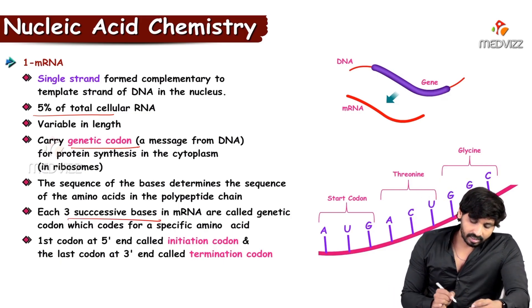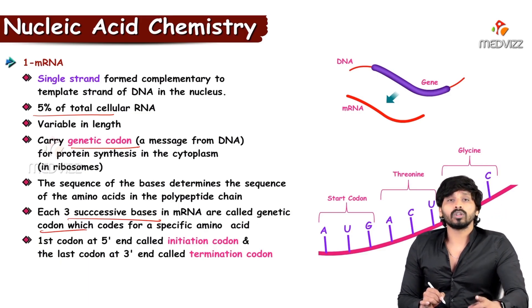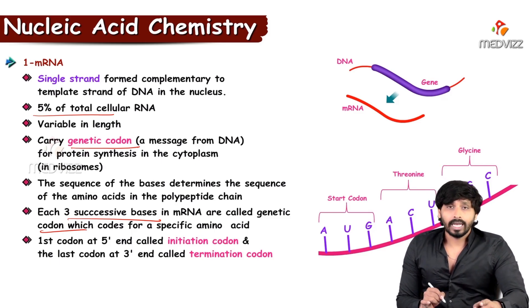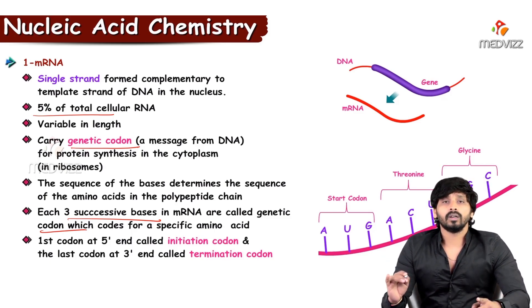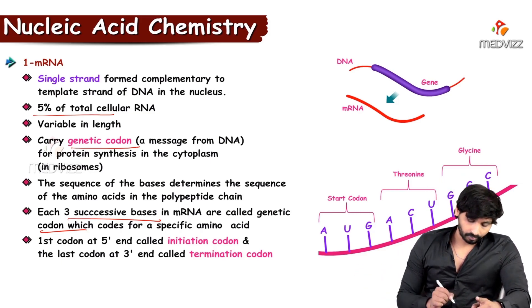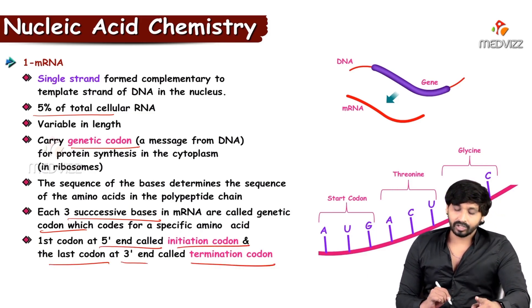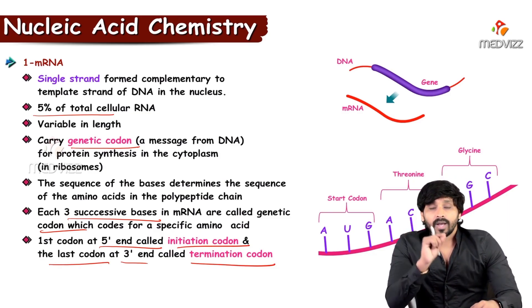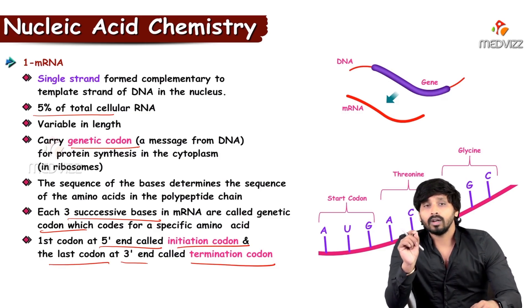Each three successive bases in mRNA is called a genetic codon, and these genetic codons code for particular amino acids. For example, AUG is the starting codon which codes for the amino acid methionine. Like this, all 20 amino acids in our body have specific codons. The first codon at the 5 prime end is called the initiation codon, and the last codon at the 3 prime end is called the termination codon.